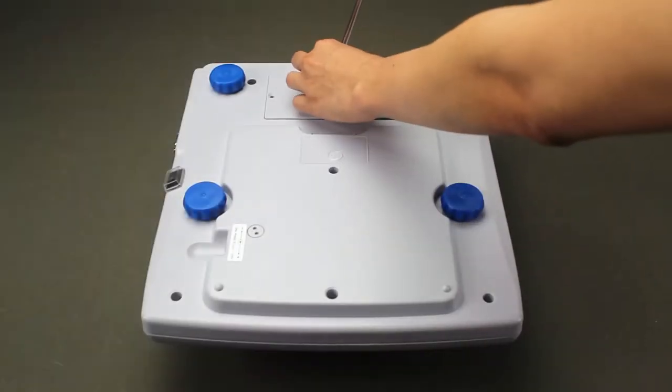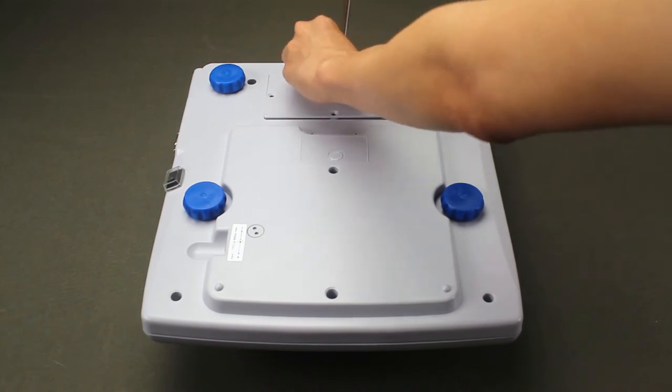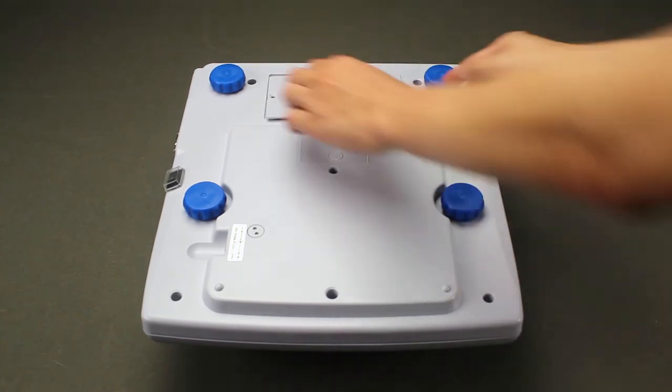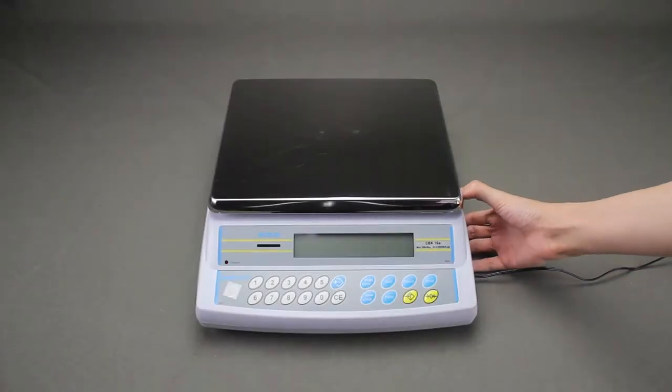The CBK is powered by electricity or a built-in rechargeable battery pack, making it ideal for production, warehouse or field use.